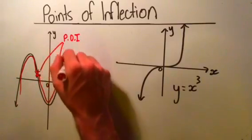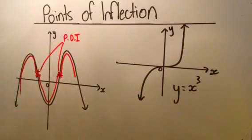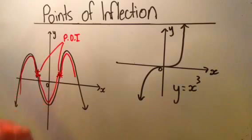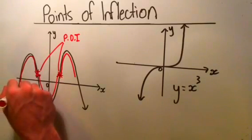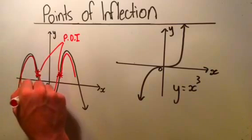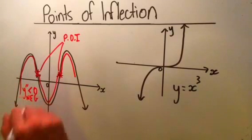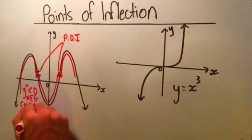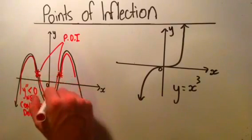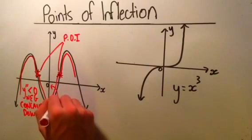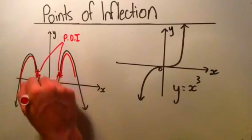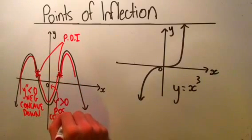Here the curve bends up, here the curve bends down. Where the curve bends down, so in this area, the second derivative is going to be negative — less than zero — because it is concave down. And over here in this section, we know the second derivative is going to be greater than zero, which is positive, because this part of the curve is concave up.